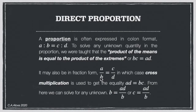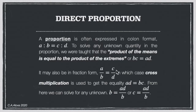It may also be written in fraction form: a over b equals c over d. This is why they're called rational numbers — they can be written as a ratio. Cross multiplication is just another way of expressing the product of the means equaling the product of the extremes. From bc = ad, we can solve any unknown by isolating the variable, for example, b = ad/c.